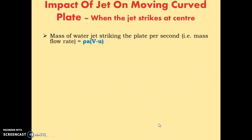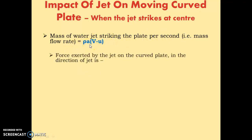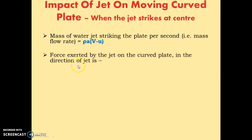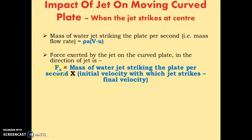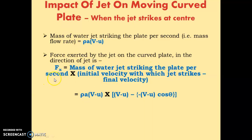The mass of water jet striking the plate per second — that is, the mass flow rate — is rho times a times (v minus u). The force exerted by the jet on the curved plate in the direction of the jet, Fx, equals mass flow rate multiplied by (initial velocity minus final velocity). Mass flow rate is rho a (v minus u), initial velocity is (v minus u), and the final velocity is minus (v minus u cos theta).